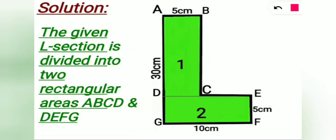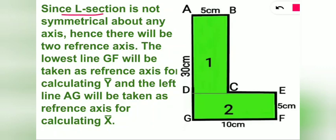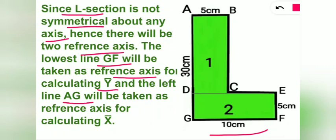In order to calculate the CG of the given L section, let's divide this L section into two rectangular areas ABCD and DEFG. Since our L section is not symmetrical about any axis, hence there will be two reference axes. The lowest line GF will be taken as reference axis for calculating Y bar, and the left line AG will be taken as reference axis for calculating X bar.